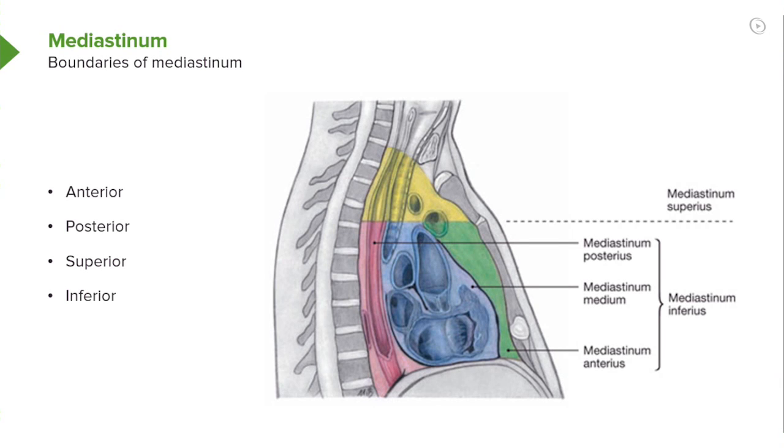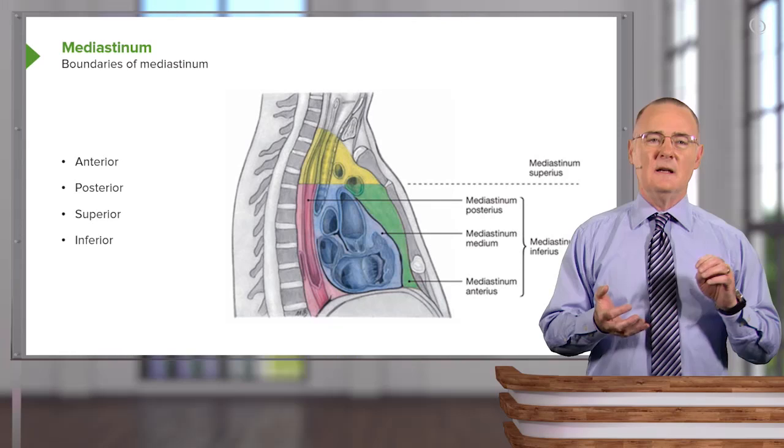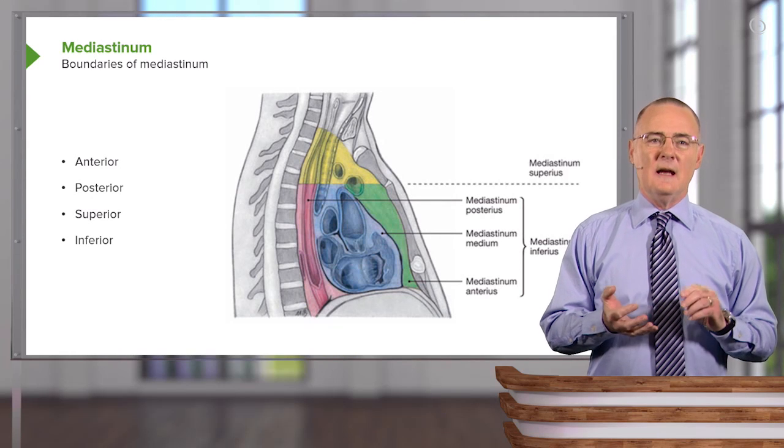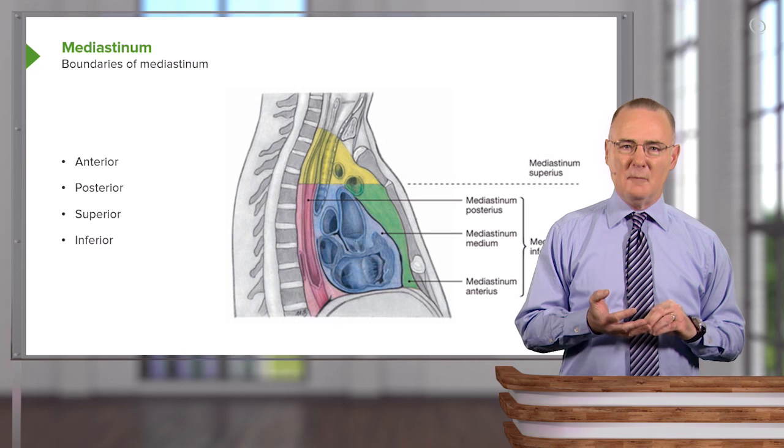On our next slide, you'll be able to understand the various boundaries that limit this particular region within our thoracic cavity. The first thing that we need to understand would be the boundaries of the mediastinum. Those boundaries will be an anterior boundary, a posterior boundary, a superior boundary, as well as an inferior boundary.